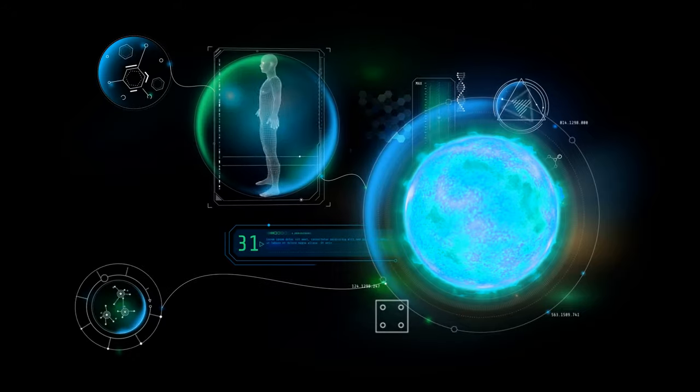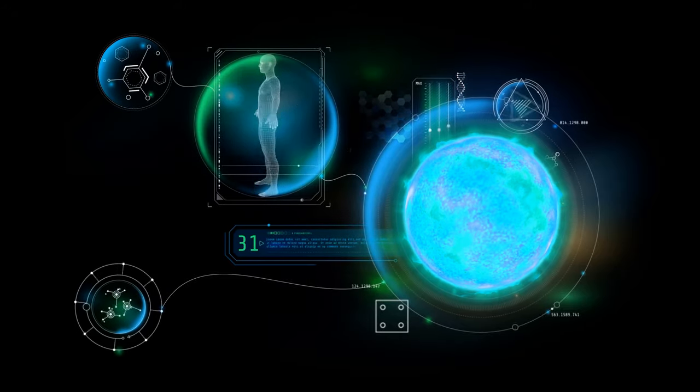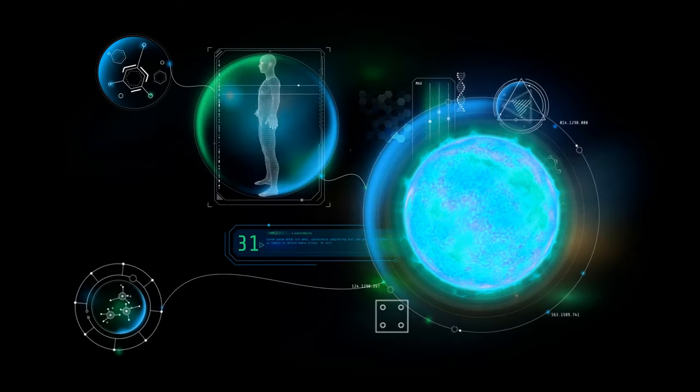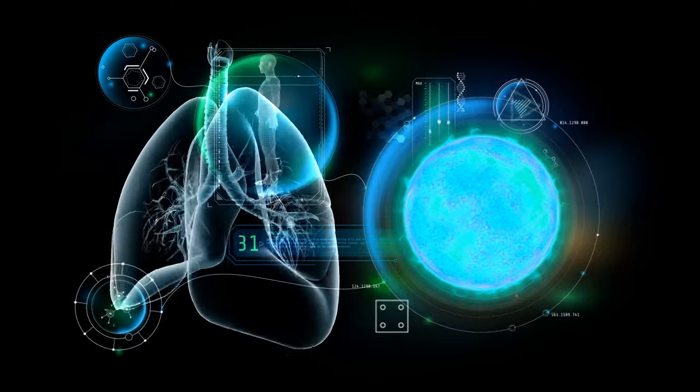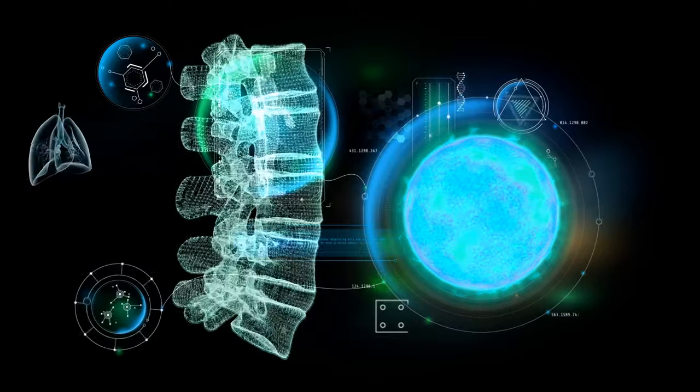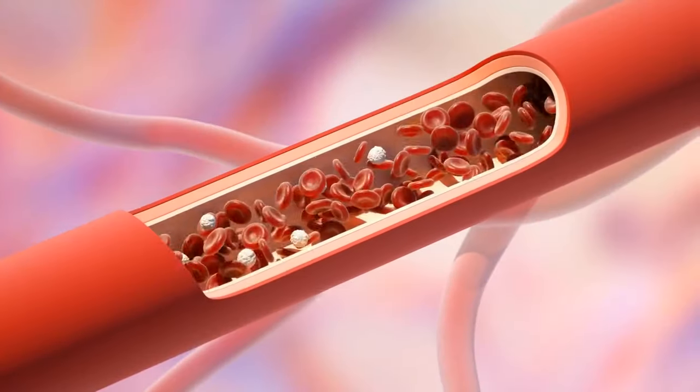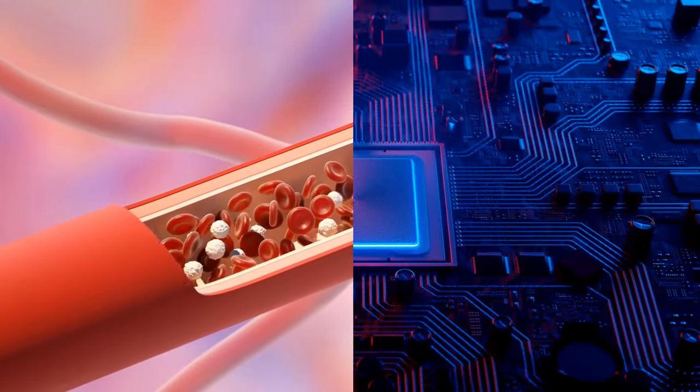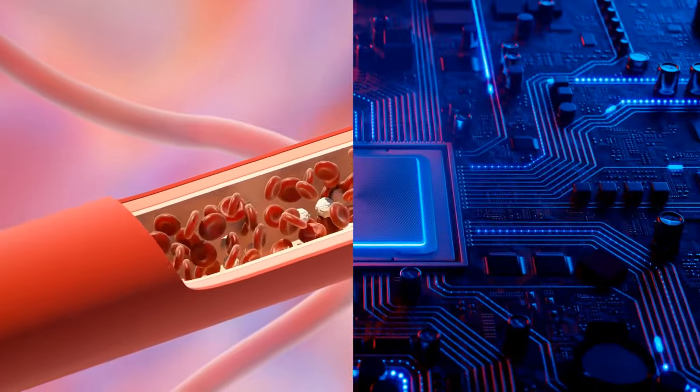It might come as a surprise, but many of the elements you're made of come from supernova. It can be anything, from the oxygen you're breathing to the calcium your bones contain. The iron in your blood or the silicon in your computer could easily have been brewed in the heart of a star.